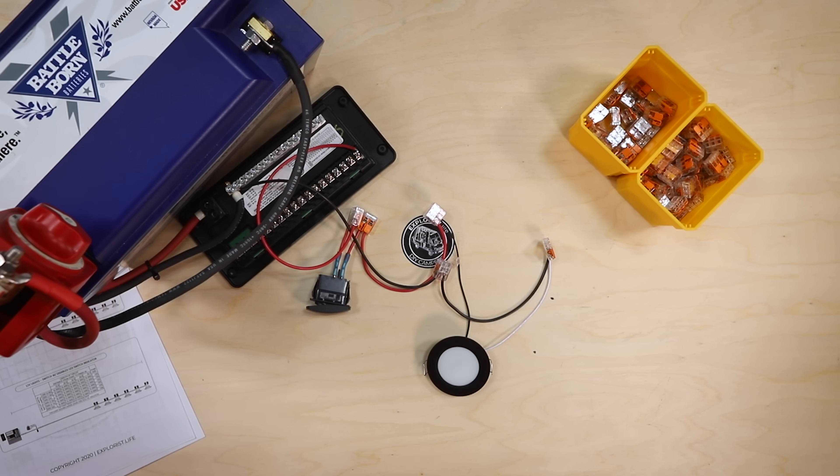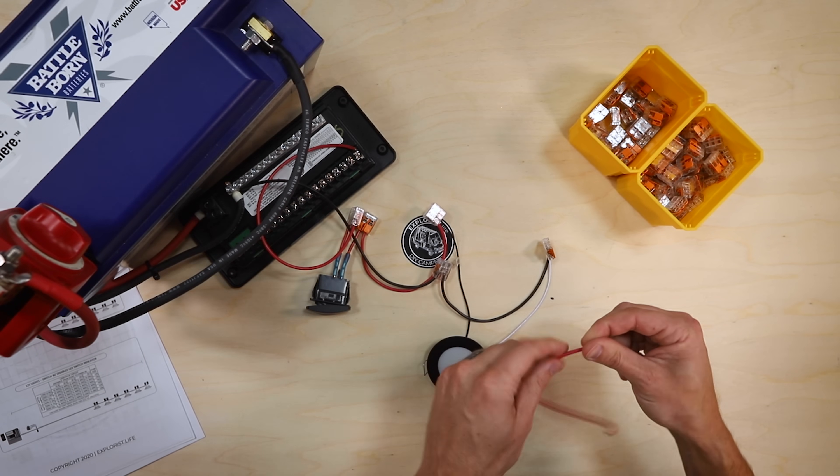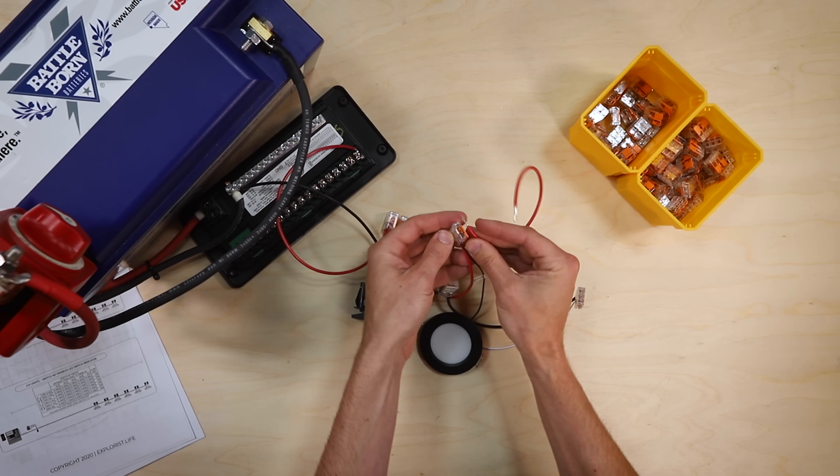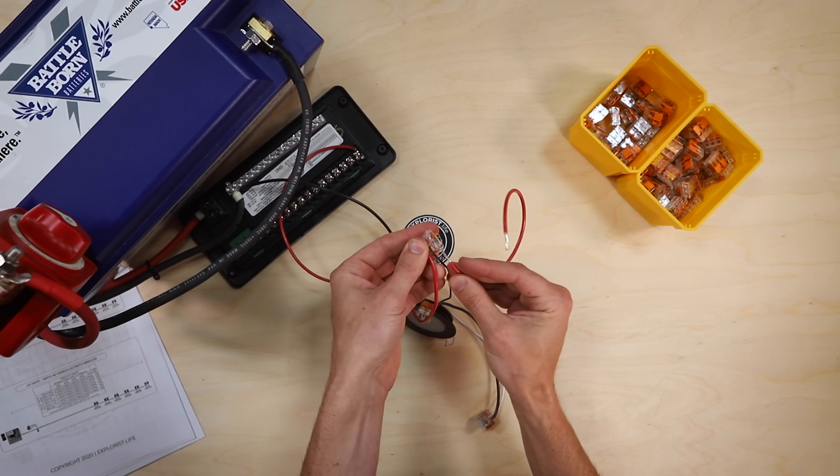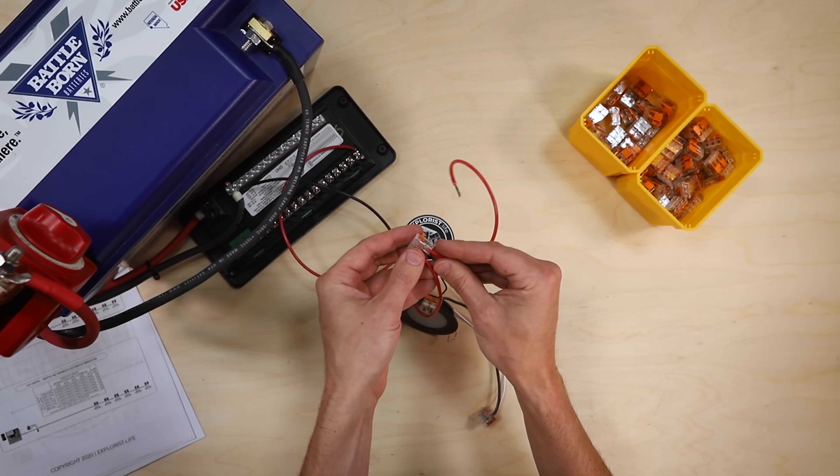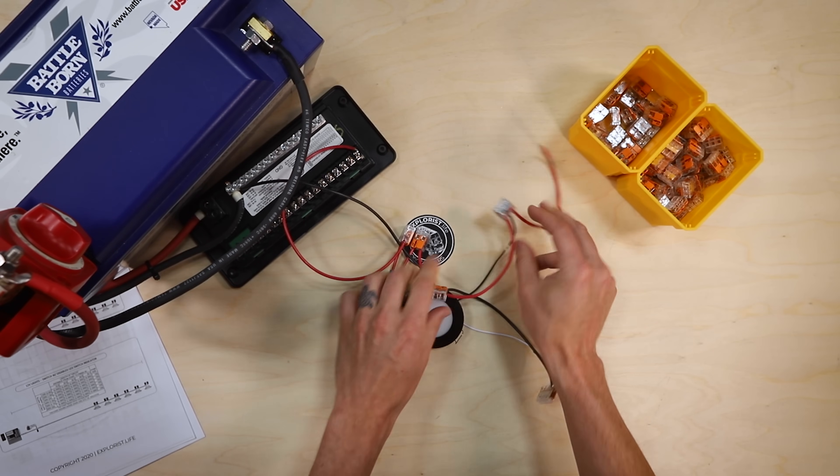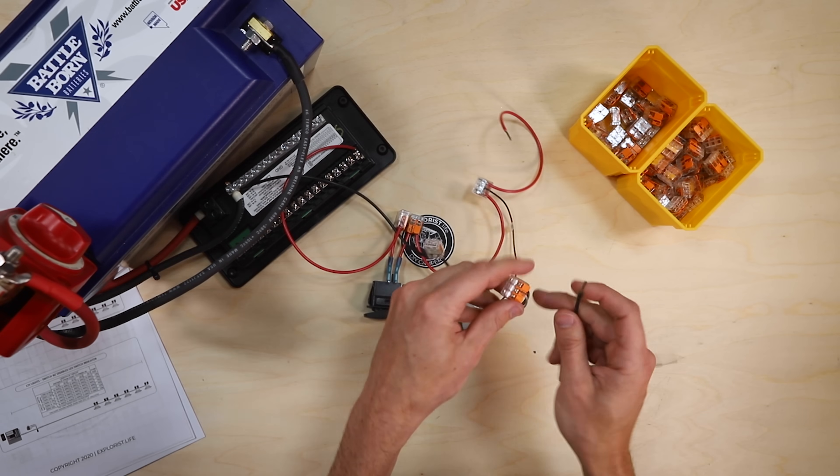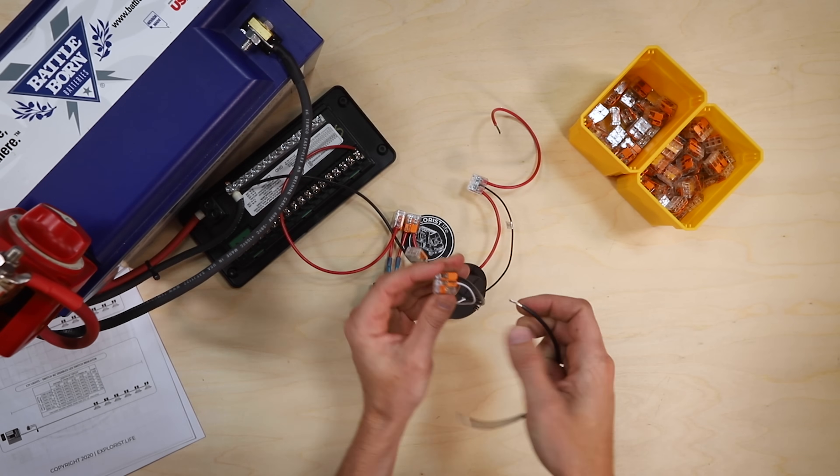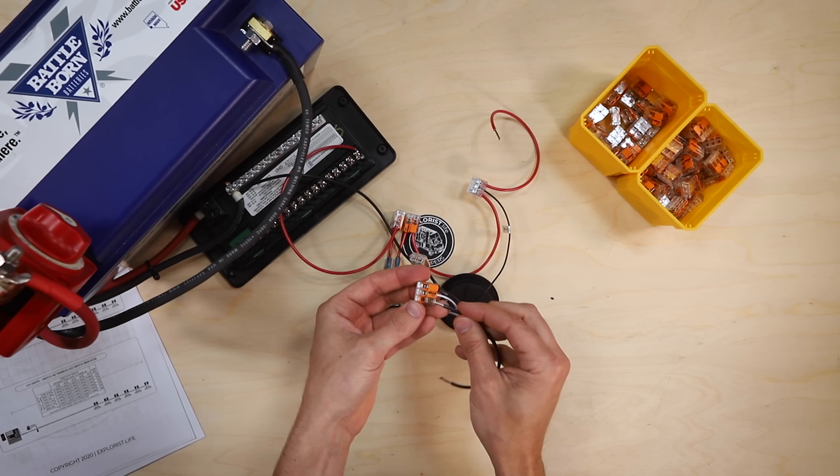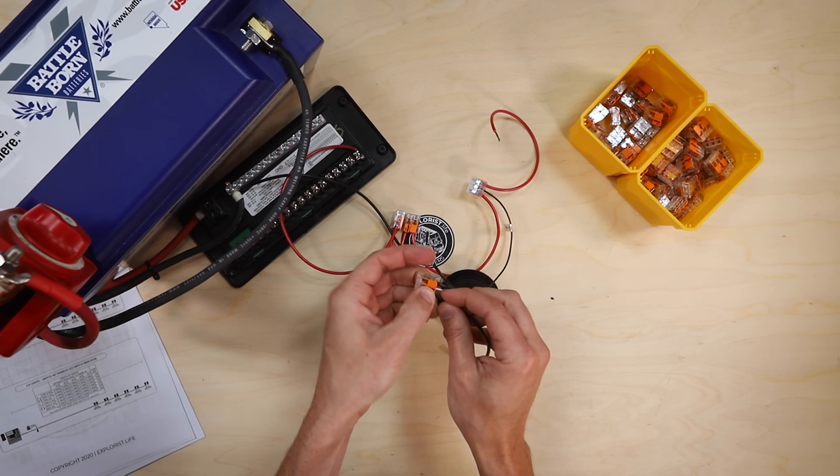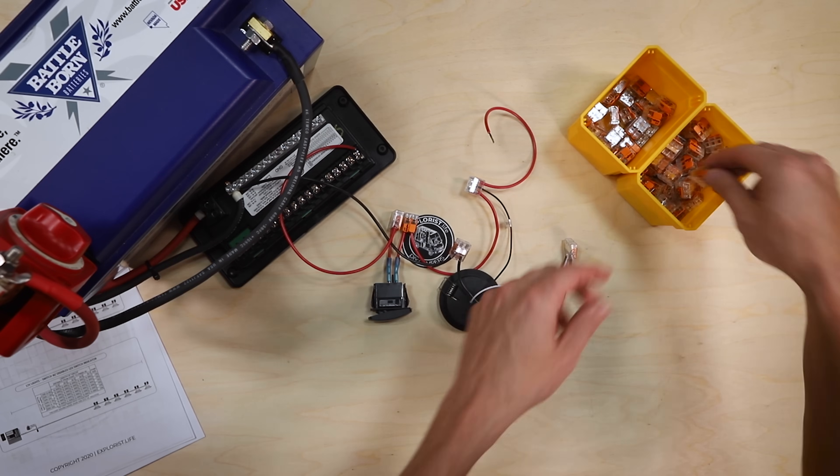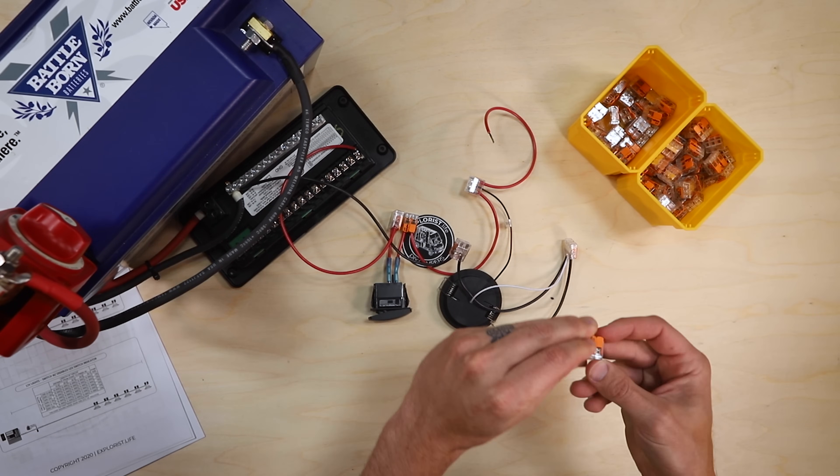Now, what if you wanted to put another light next to it? Well, we just keep on doing the same thing that we've been doing. We add another wire to this three conductor lever nut, and a black wire to the negative three conductor lever nut.